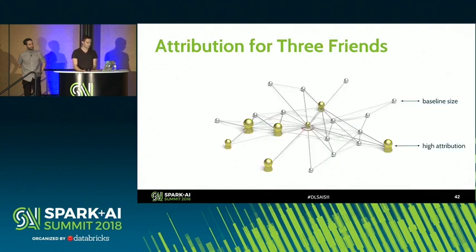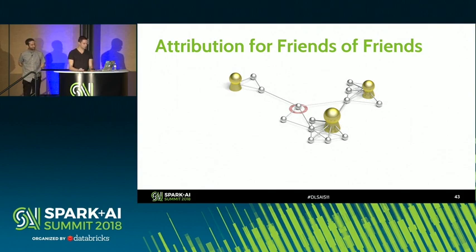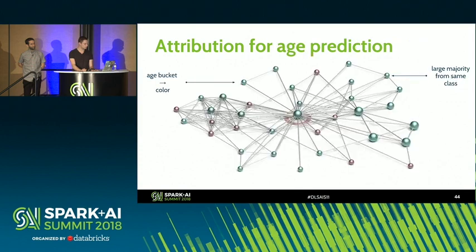For the three friends example, we can see that the rockstars have the highest attribution in the network, and the baseline vertices — the gray spheres — are much smaller than the rockstars with high attribution. The friends of friends example is even more clear: the size of the rockstars' attribution is greater than everything else in the network. So we now know attribution works — we can find out which were the most influential vertices.